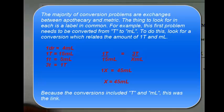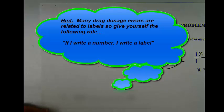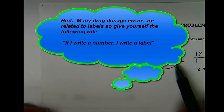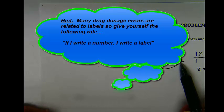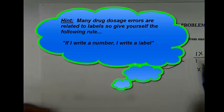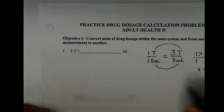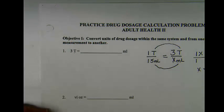But it would be easy to get this problem wrong at this point and put the wrong label. So just do a quick visual check: I was solving for milliliters. When I answered x, because x equals this number, the label for that number is what we were solving for.